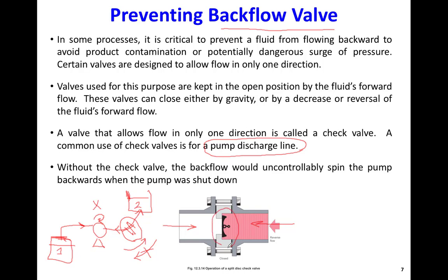This gate in the check valve can work pneumatically or by gravity. For example, if the valve is oriented so the gate is pinned at the top, when there is flow from bottom to top the valve is open. When the flow reverses from top to bottom, the weight of the gate causes it to close due to gravity, blocking the pipeline. This is how a gravity-based check valve works — it is also called a backflow valve.